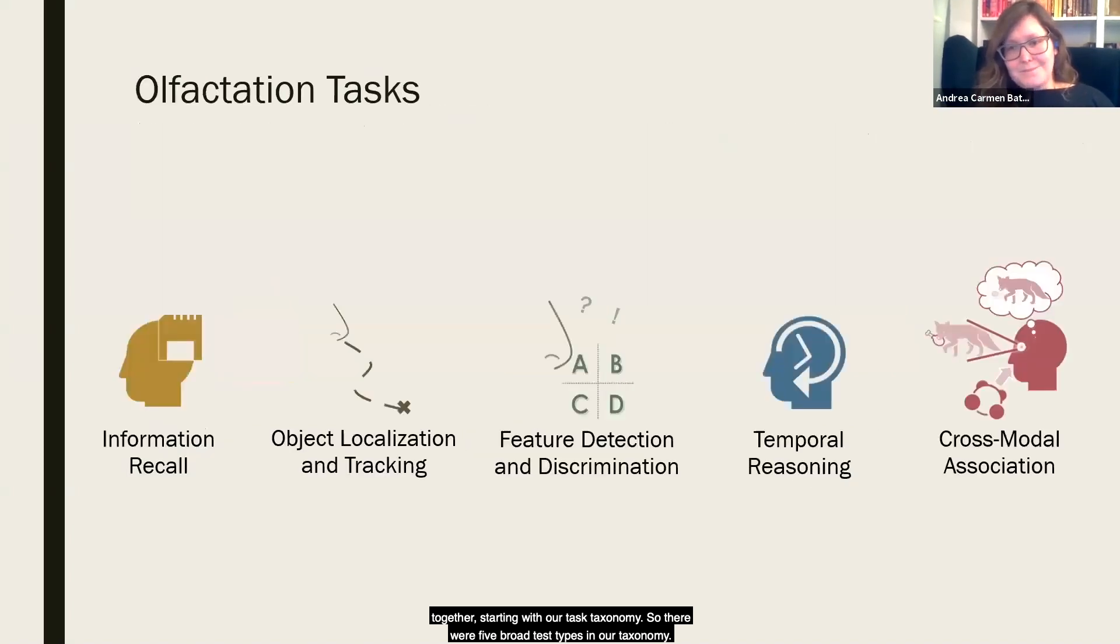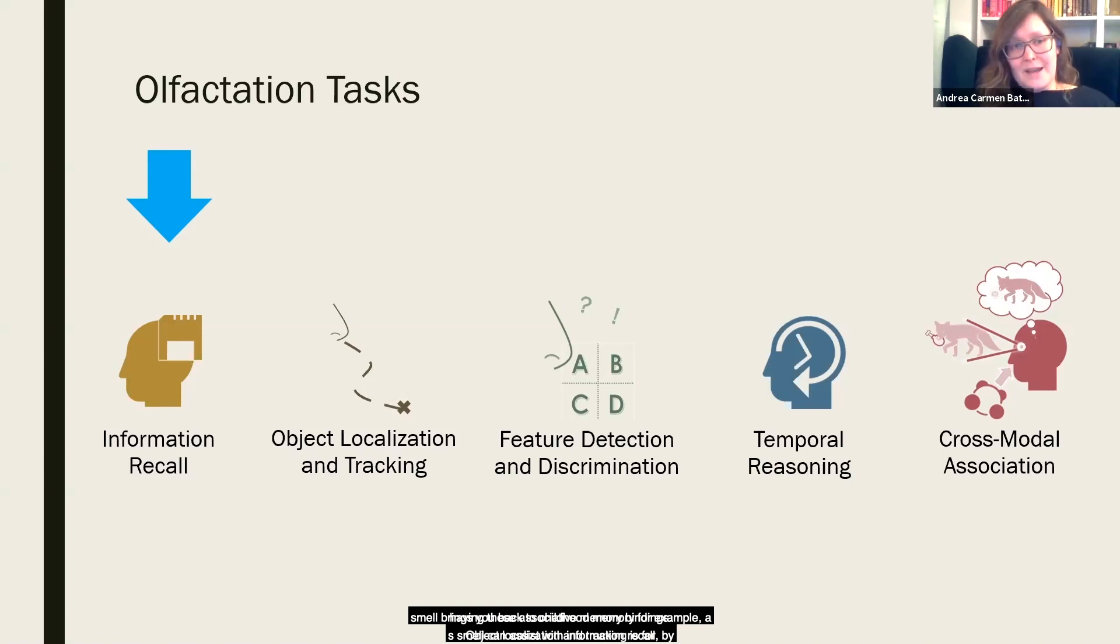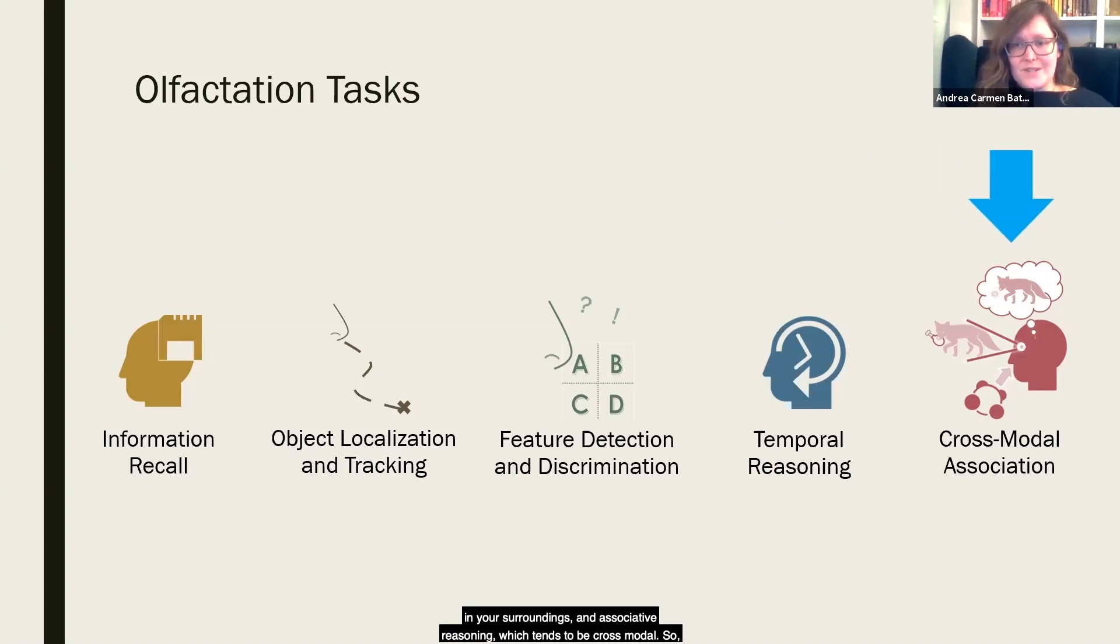So I should give a little bit more detail on this as the background of our current work. Starting with our task taxonomy. There were five broad task types in our taxonomy, and for each one of these I'm going to give a sort of natural mapping example just to illustrate what I mean. Information recall is sort of like when a smell brings you back to a childhood memory, for example. A smell can assist with information recall by having these associative memory bindings. Object localization and tracking is, for example, a bloodhound helping the hunter to track a fox. Feature detection and discrimination, for example, picking out nuances in the bouquet of your favorite wine. Temporal reasoning could be when you smell something new in your surroundings, and associative reasoning, which tends to be cross-modal. It's been indicated that the scent of lemon, for example, makes people think of sharp and angular shapes. And that's what I mean by cross-modal here.